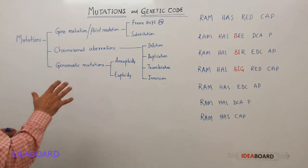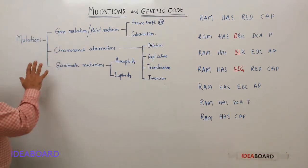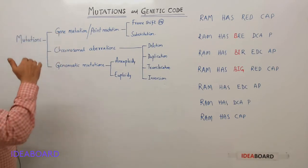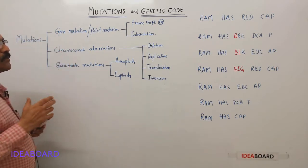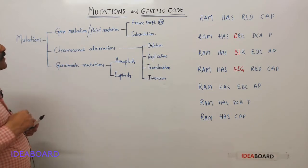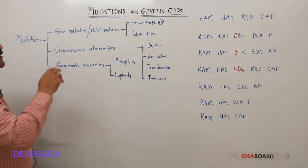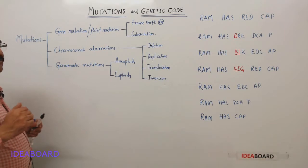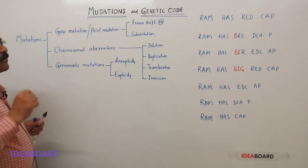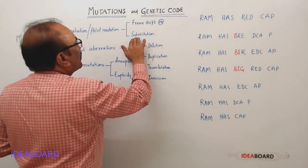Just to remind you about the types of mutations, I have written a flowchart here. Mutations are of three types. First, gene mutation or point mutation: if there is a change in the nucleotide sequence or nitrogen base sequence within a gene or segment, that is called a gene mutation or point mutation. This is of two types: frame shift mutation and substitution.